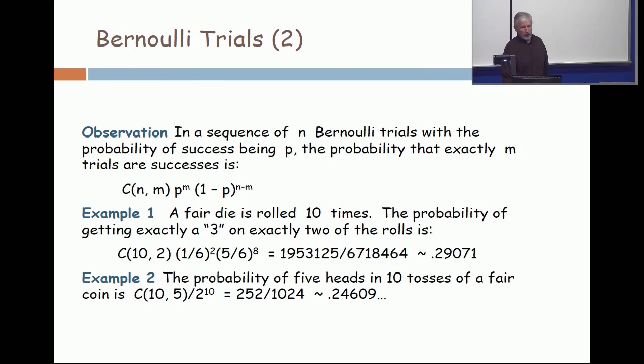So, we go back to the example on the previous slide. A fair die is rolled ten times. The probability of getting a 3 exactly twice is C(10, 2). Out of the 10 trials have two of them be 3. The probability of getting the 3 is 1 out of 6, so 1 out of 6 squared. The probability of not getting a 3 is 5 out of 6, 5 out of 6 to the 8th.